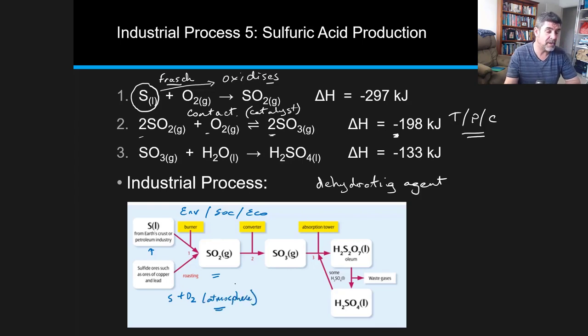Because it will go through exactly the same process, just not in a controlled way and we'll end up with acid rain as a very important environmental consequence. So that's what happens if we don't control the process. If we do control the process, hopefully what we're able to do is use the contact process to move the sulfur dioxide towards sulfur trioxide.